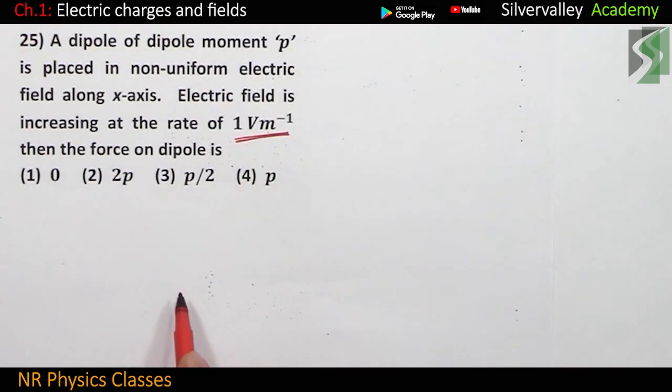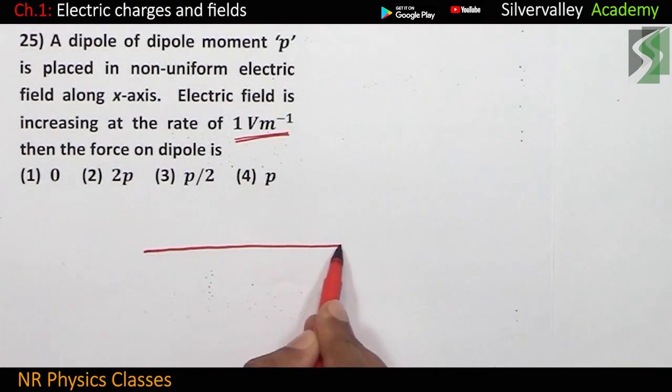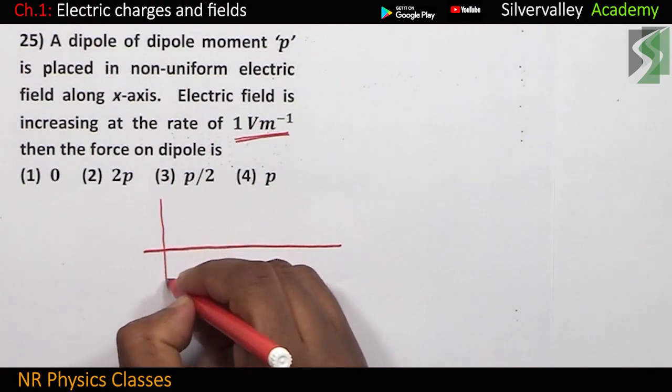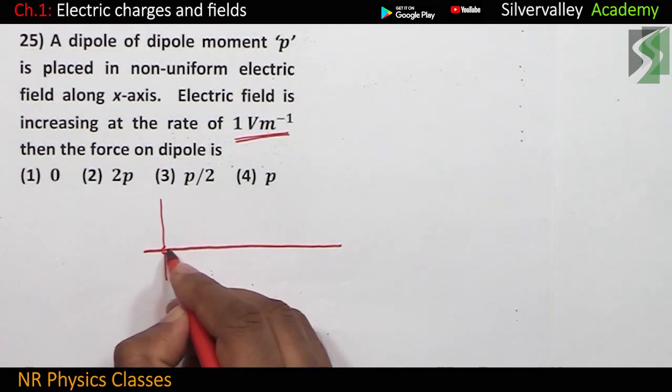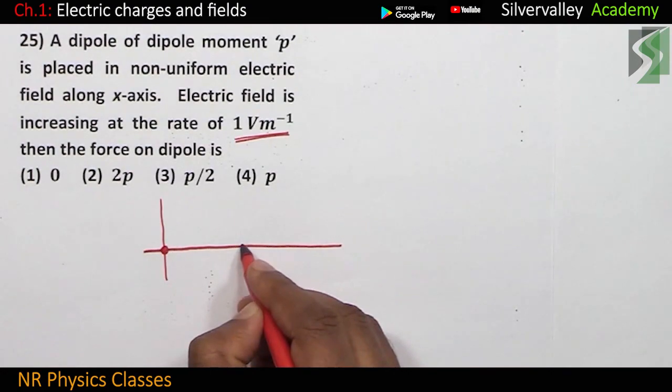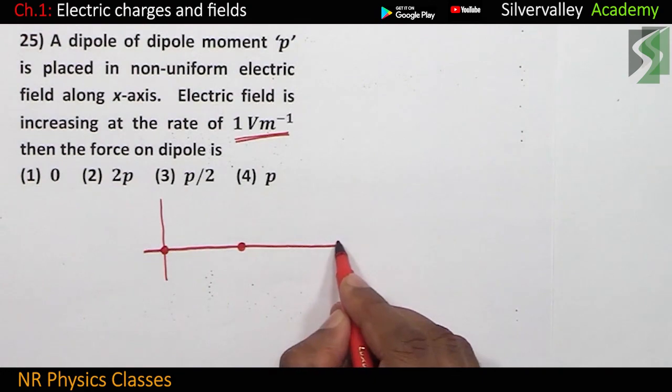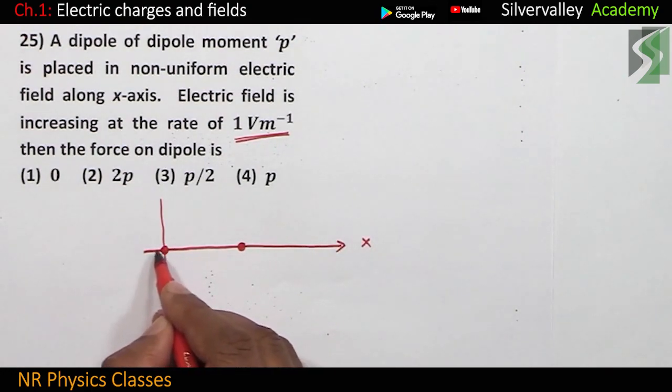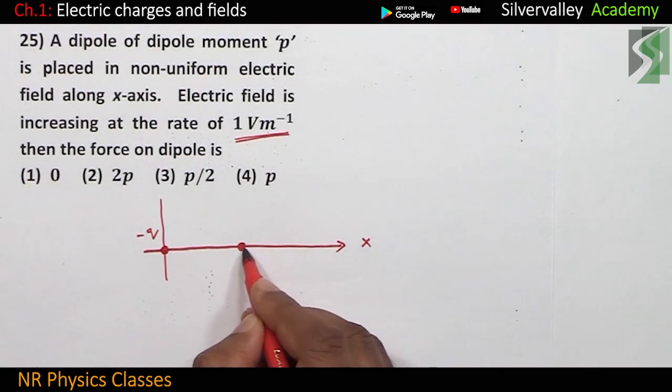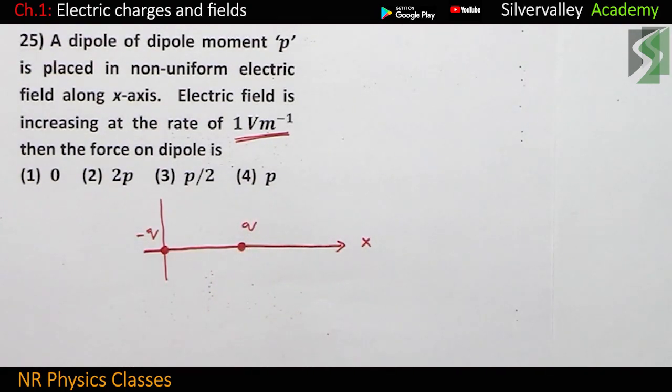So, to understand this, x-axis, y-axis, y-axis. Let me keep two charges on the x-axis. So, this is x-axis. This is minus q. This is plus q. There is electric field along x-axis. So, electric field at this point is 0. Assume it is 0. Then force equal to charge into electric field which is equal to 0.